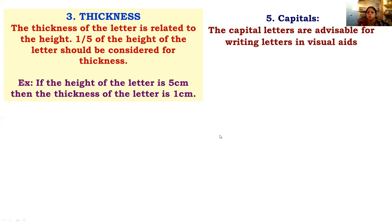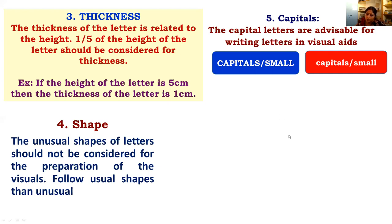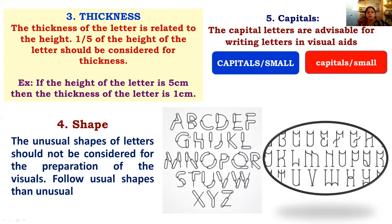The fourth point is the use of capitals. For captions or important points, it is advised to always use capital letters. The impact of a capital letter versus a small letter is clearly different. Whenever presenting information through visual aids, always use capitals rather than small letters. The fifth point is shape — always use the usual lettering shape rather than unusual shapes. If letters are presented in an unusual form, it is very difficult to understand and takes a long time to decipher.